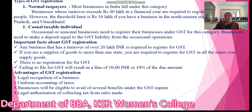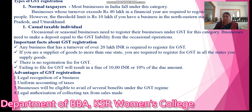Next, types of GST registration. The first one is normal taxpayer. Most businesses in India fall under this category. Businesses whose turnover exceeds Rs. 40 lakhs in a financial year are required to register as a normal taxpayer. However, the threshold limit is Rs. 10 lakhs if you have a business in a North-Eastern state, such as Jammu and Kashmir, Uttarakhand, Himachal Pradesh, etc.